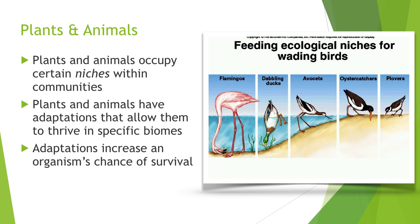Plants and animals are the biotic factors found in a biome, and they fit into a certain space within that biome called the niche. Each species plays a certain role in its environment, and any interactions it has with its environment — including where it lives, how it mates, and the food source it has — determine the niche that it falls into.